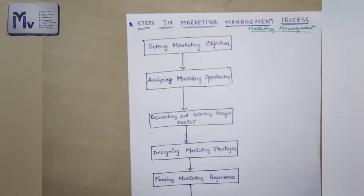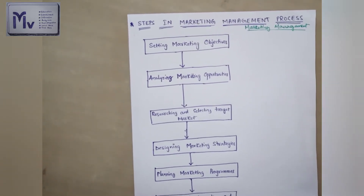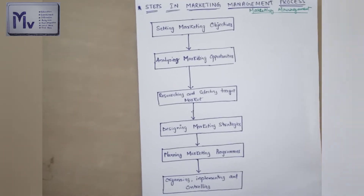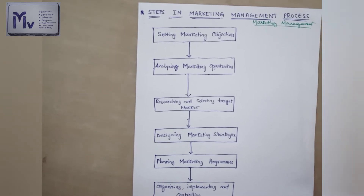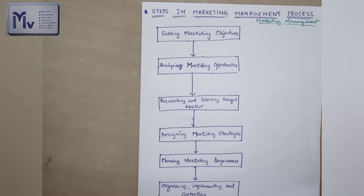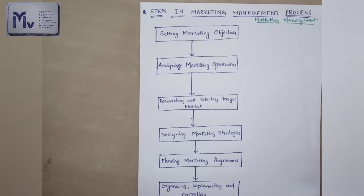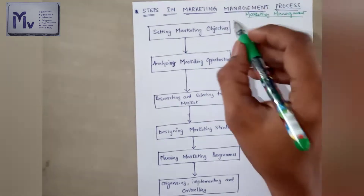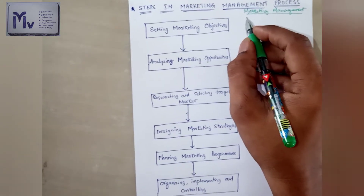Hello everyone. Our next topic in marketing management is the steps in the marketing management process. There are six main steps: setting marketing objectives, analyzing marketing opportunities, researching and selecting target market, designing marketing strategies, planning marketing programs, and organizing, implementing and controlling.